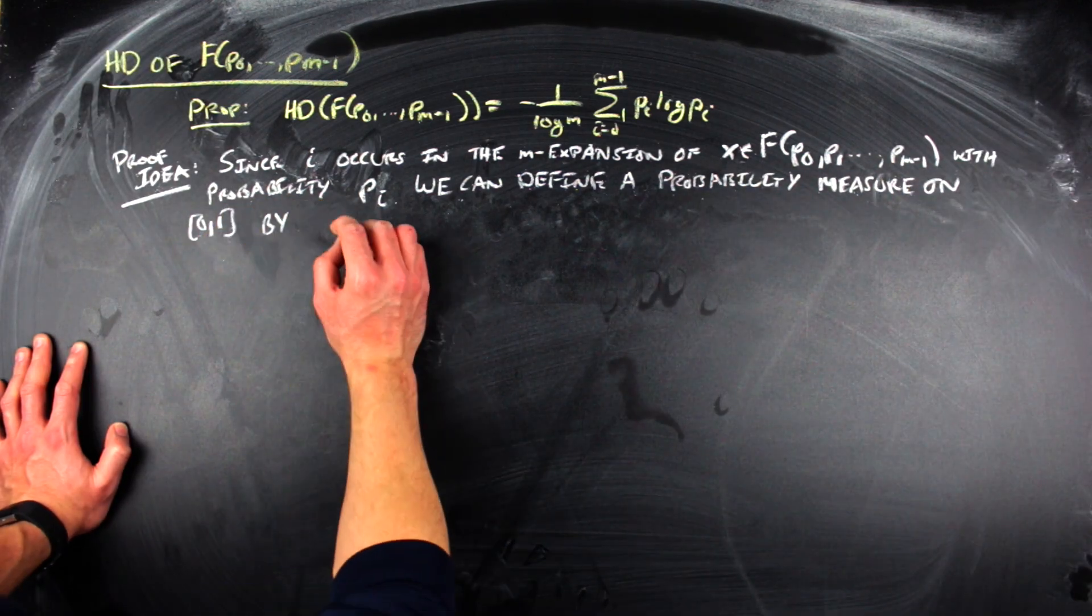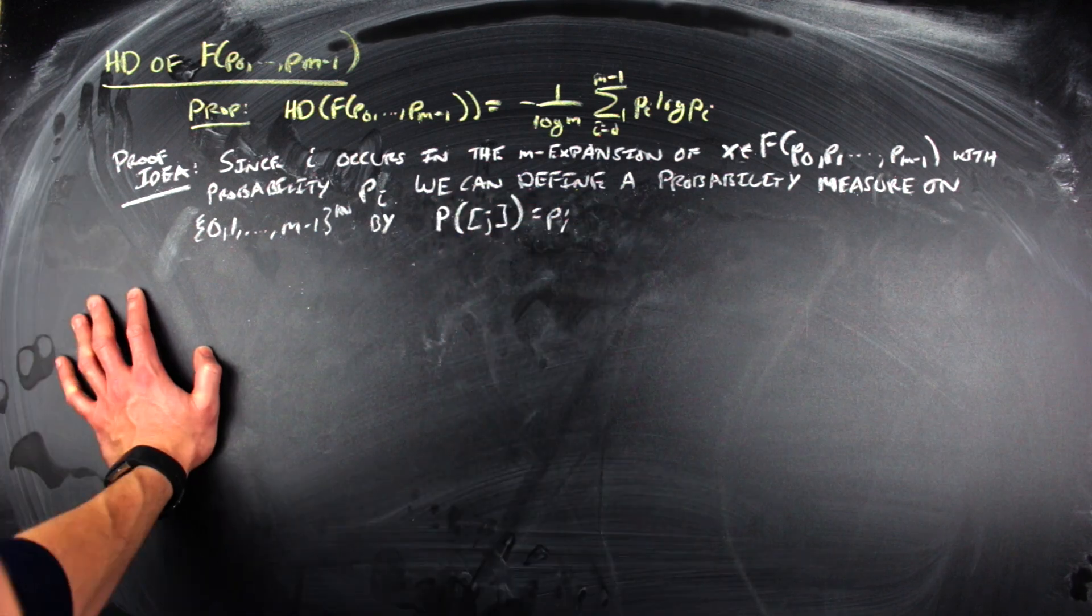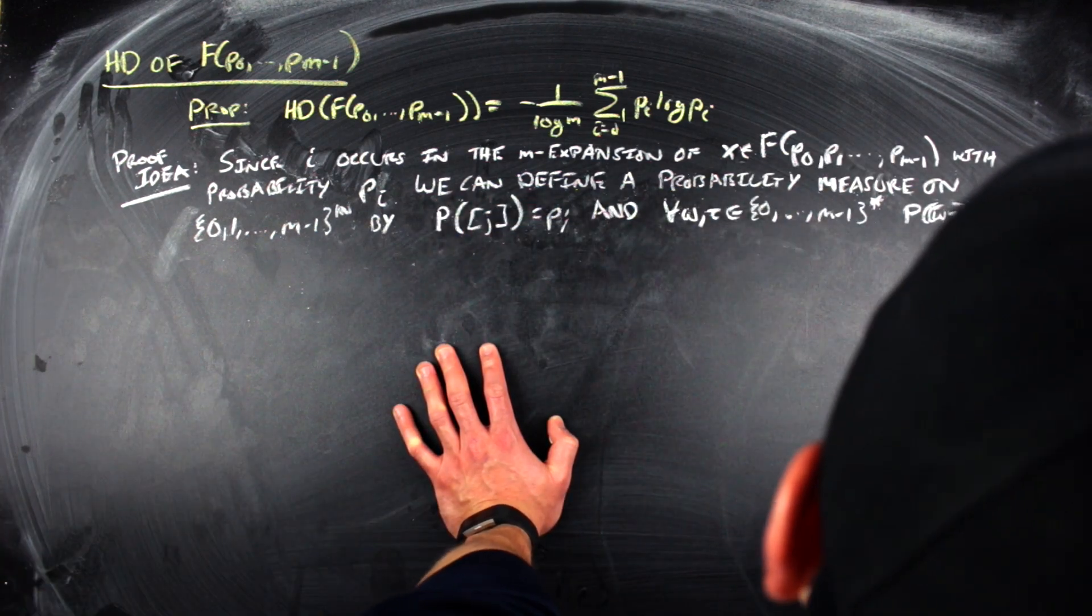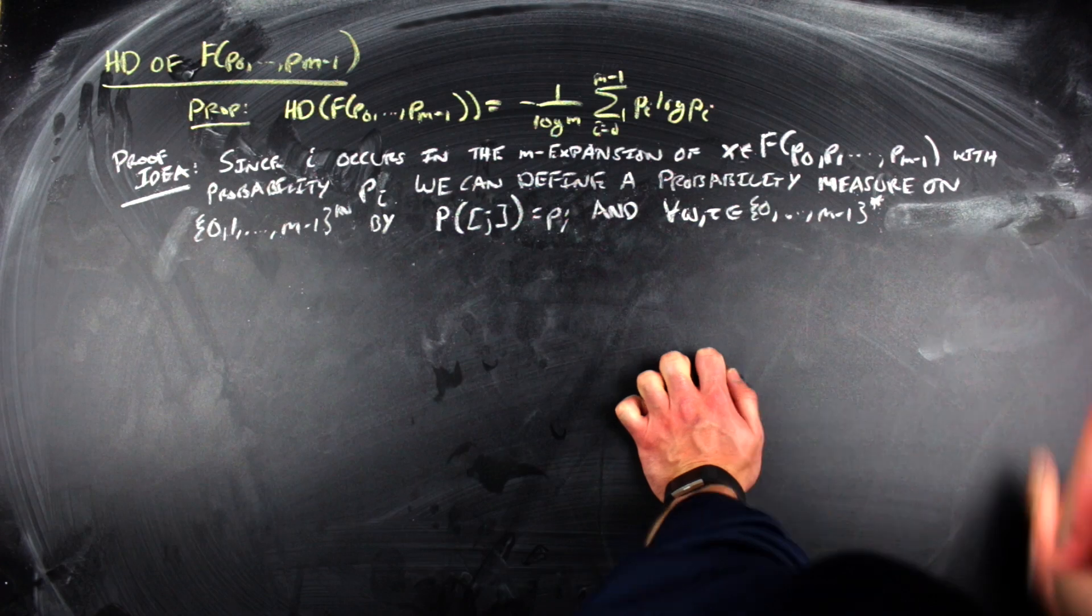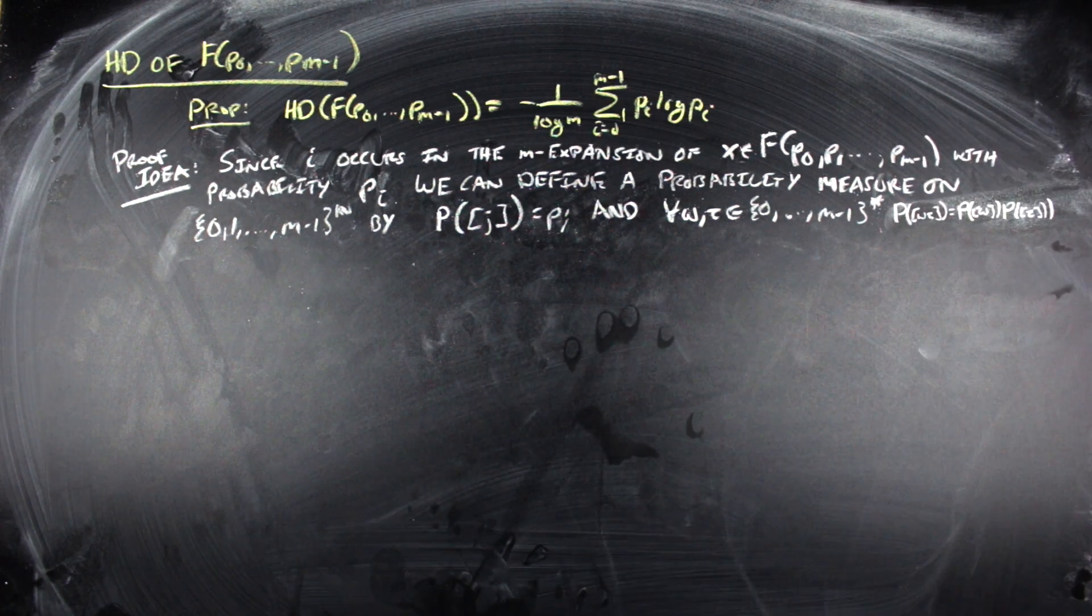And we extend this by saying for any finite sequence of symbols omega and tau that the probability that you start with omega and then tau is going to be the probability that you started with omega times the probability that you started with tau.